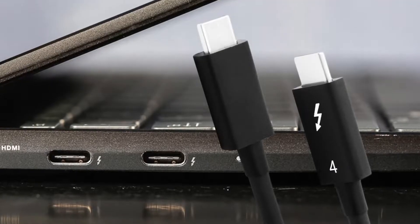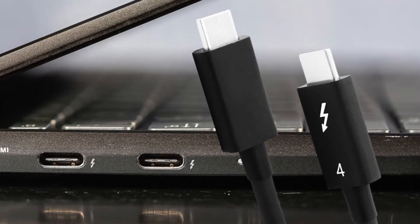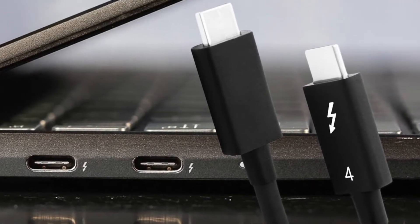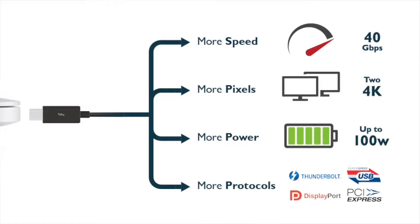At first glance, it's really hard to be able to tell the difference in how the cable looks on the thunderbolt 3 versus the thunderbolt 4. Both of these cables share the exact same USB-C connector, and both cables have a top speed of 40 Gbps.